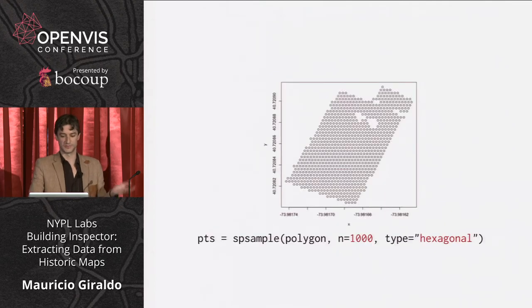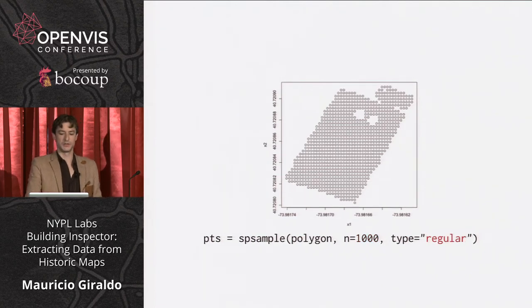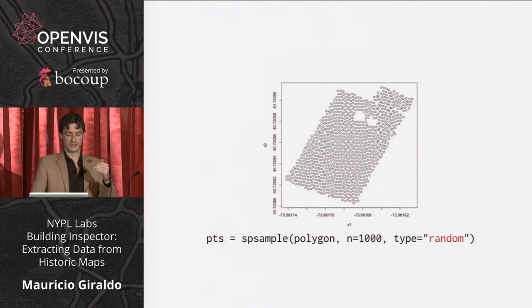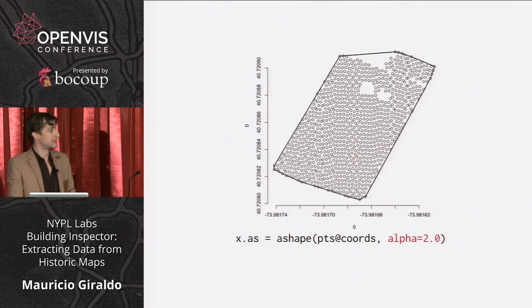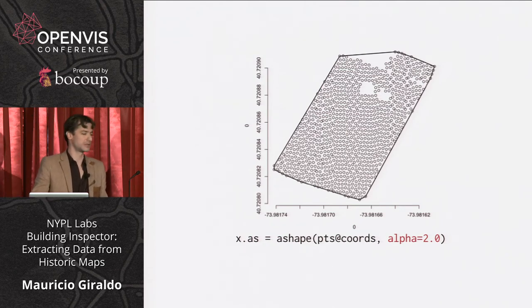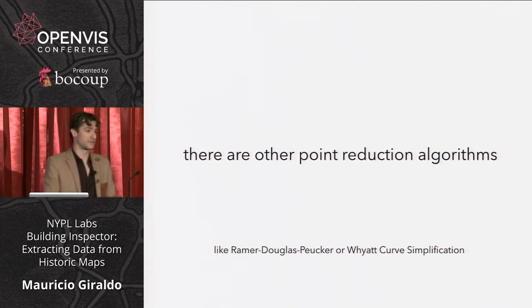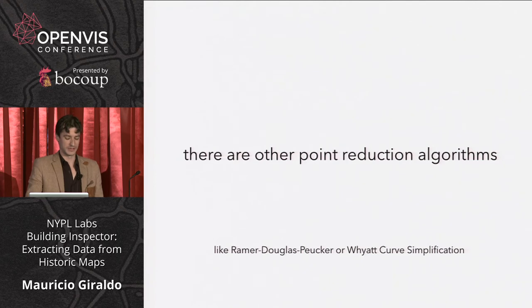We need a set of points first. We extract a set of points of the polygon. Using a function in R, we can extract a hexagonal grid, rectangular grid, or random grid of points — and we actually do all of those to find the best result, kind of brute force, because not every time will we be able to generate a satisfying shape. We go through all of them and alpha-shape this set of points. This is an intentionally bad example showing where we lost the L-shape in the process. There are other point reduction algorithms we didn't know then but know now — if anyone wants to collaborate, it's an open repo.